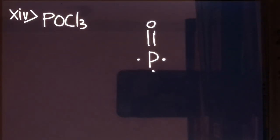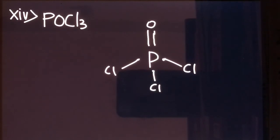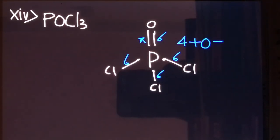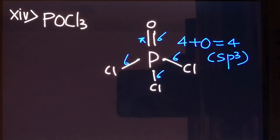Now let's see POCl₃, that is phosphoryl chloride. Phosphorus has five outermost electrons. It forms one double bond with oxygen and three single bonds with chlorine. All valence electrons of phosphorus have been used in bonding, so no lone pair is left. In a double bond, one is sigma and the other is pi — we count only sigma bonds in the steric number. So the number of sigma bonds is four and lone pair is zero — steric number is four and hybridization will be sp3.